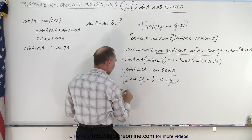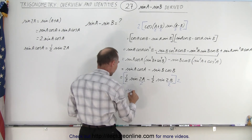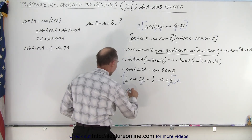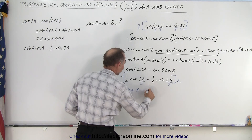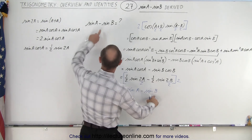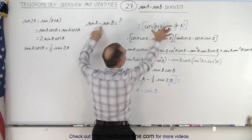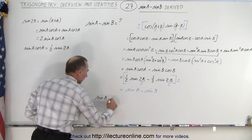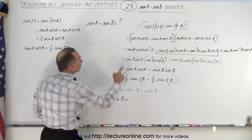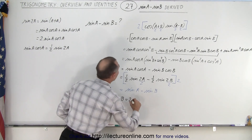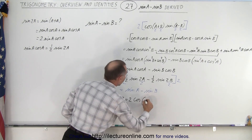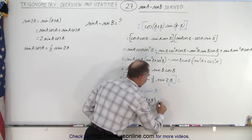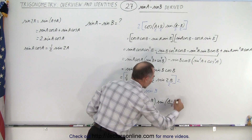When I do that, I end up with the sine of a minus the sine of b. That's exactly what I want, and that is equivalent to this expression. So I can now write that the sine of a minus the sine of b is equal to 2 times the cosine of a plus b over 2 times the sine of a minus b over 2.